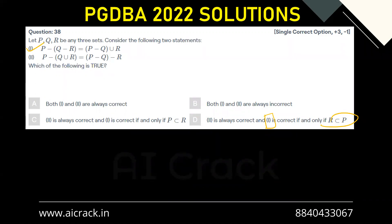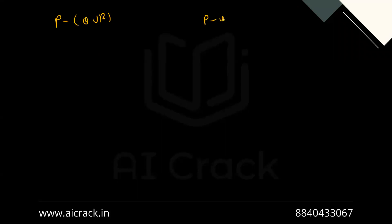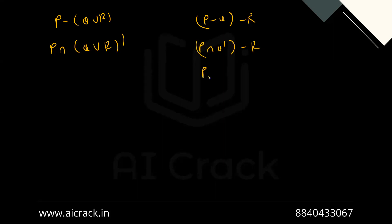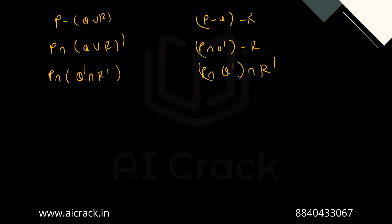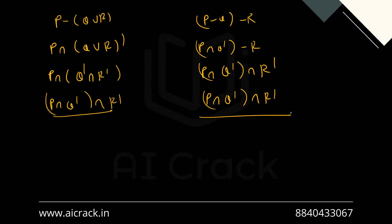Now for the second statement: P minus (Q union R) versus P minus Q minus R. Simplifying P minus (Q union R) gives P intersection (Q union R) complement, which by De Morgan's law becomes P intersection (Q complement intersection R complement). And P minus Q minus R simplifies to P intersection Q complement intersection R complement. Both expressions are equal by the associative property.